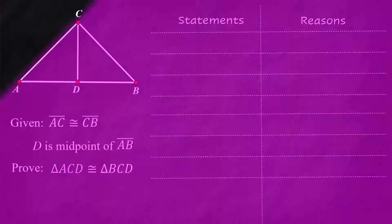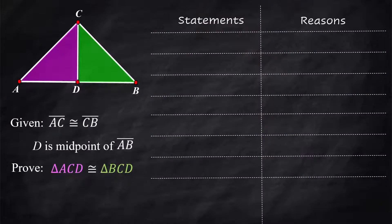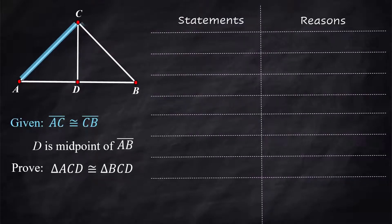We are asked to prove that triangle ACD is congruent to triangle BCD. Let's take a look at the given information in these two triangles. Segment AC is congruent to segment CB and D is the midpoint of AB.